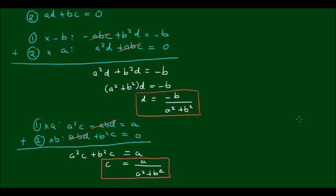So this confirms that the multiplicative inverse of a complex number does exist. It's equal to a divided by a squared plus b squared for the real component, and negative b divided by a squared plus b squared for the imaginary component.